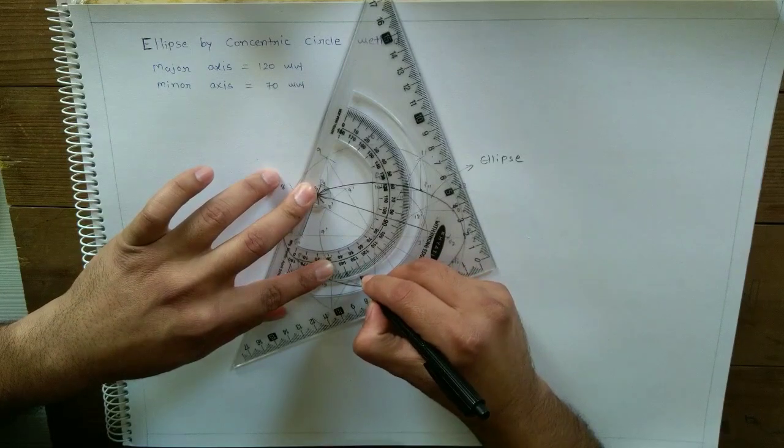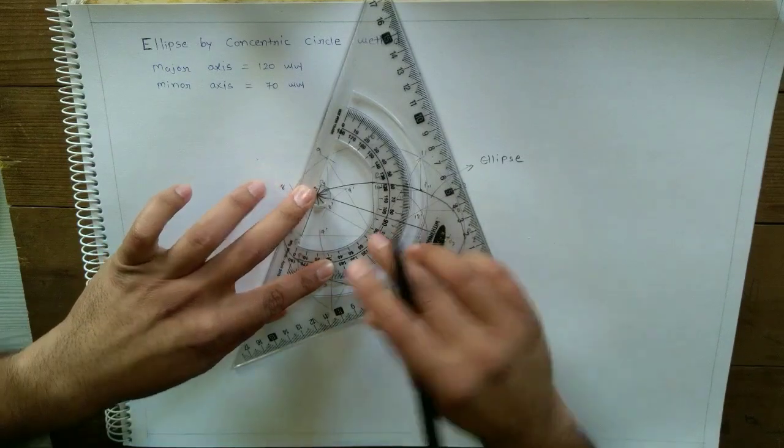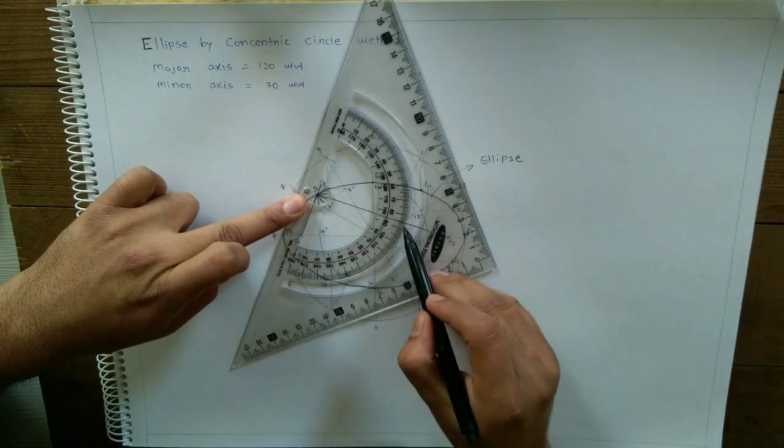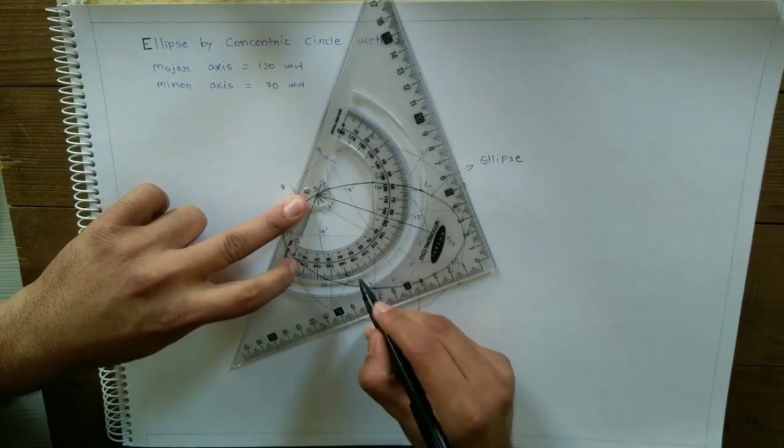This is 45 and 47. Okay, see this angle is 94. I am bisecting it. At the angle of 47 degrees, I am drawing one line which is normal to ellipse. This line is normal.